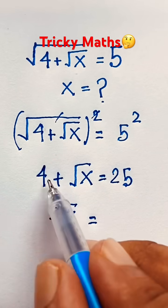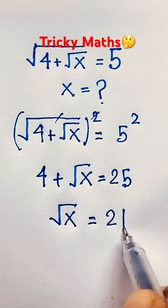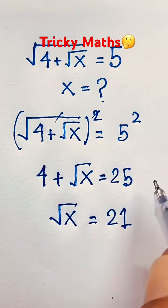Then you can say it will be square root x is equal to 25 minus 4, it will be 21. I just move on this 4 to this side, it will be negative.